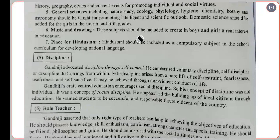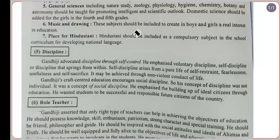Self-discipline rises from a pure life of self-restraint, fearlessness, usefulness, and self-sacrifice. It may be achieved through non-violent conduct of life. Gandhiji's craft-centered education encourages social discipline, so his concept of discipline was not individual but social. He emphasized the building of ideal citizens through education, wanting students to be successful and responsible future citizens of the country.